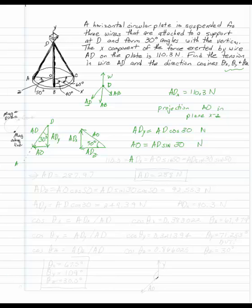I also know that ADX, from my other triangle, has to be AO sine fifty. Well, AO is AD sine thirty, I just found that out, times sine fifty. And you're given in the problem that ADX is 110.3. So all of a sudden you can solve for AD. AD is 110.3 divided by sine thirty divided by sine fifty. That gives you 287.97 when you solve.